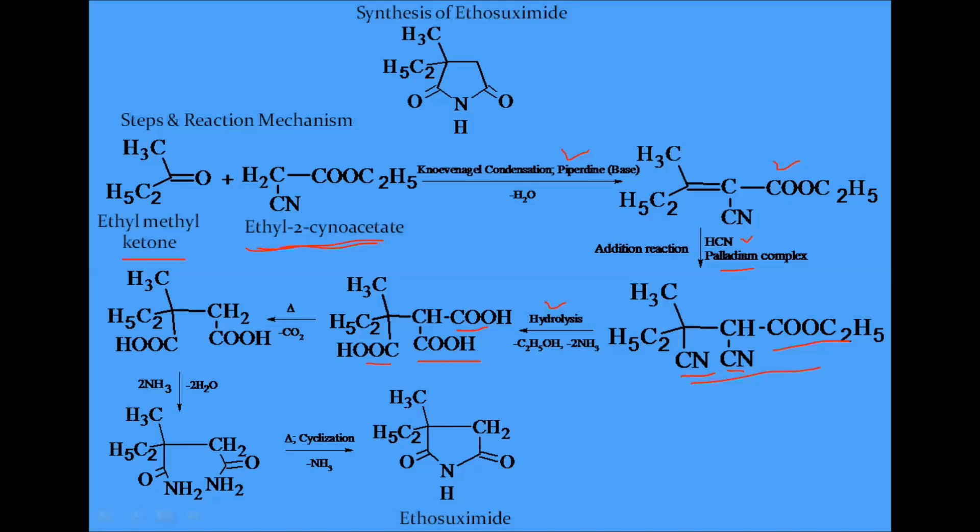And then again by heating, CO2 is released. So this intermediate is formed. And then by addition of ammonia and by heating, ethosuximide is formed. So this is the overall synthesis of ethosuximide.